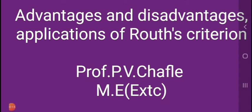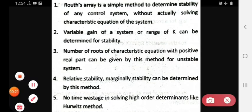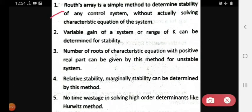The first advantage is that Routh's array is a simple method to determine the stability of any control system without actually solving the characteristic equation of the system. So using Routh's Criteria, we can find out and determine the stability of a control system without solving the characteristic equation.